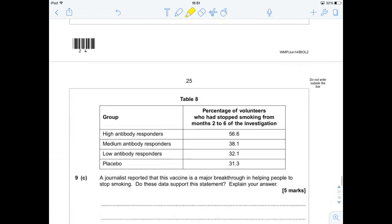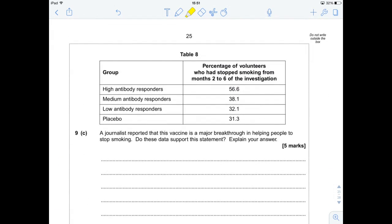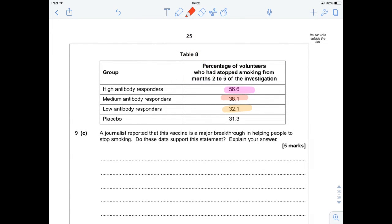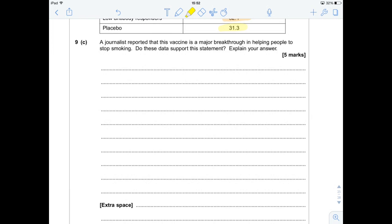So, what else have we got here? In our high antibody responders, high percentage stopped. Less stopped. We'll keep the color code the same. So, basically, you know, the higher your antibody response, the more likely you will stop smoking between months two and six. A journalist reported this vaccine is a major breakthrough. That's not like journalists at all, overstating the truth. A major breakthrough in helping people to stop smoking. Do these data support this statement? Explain your answer. Five marks.